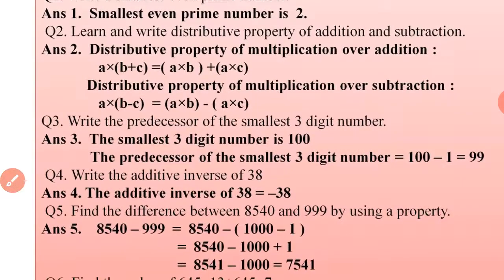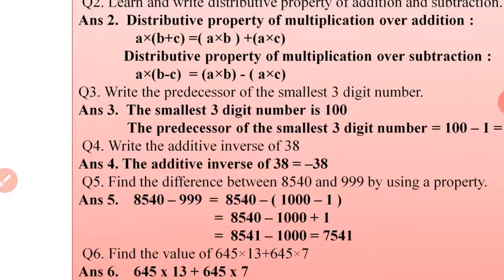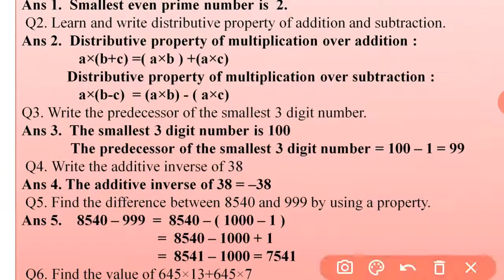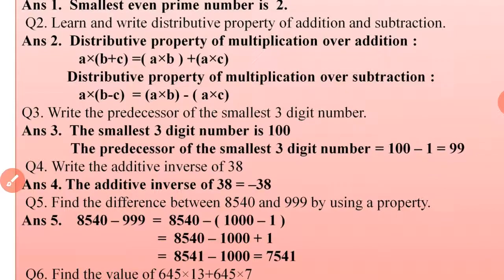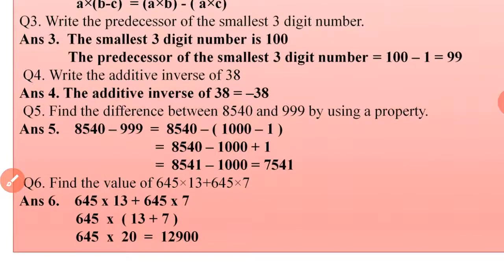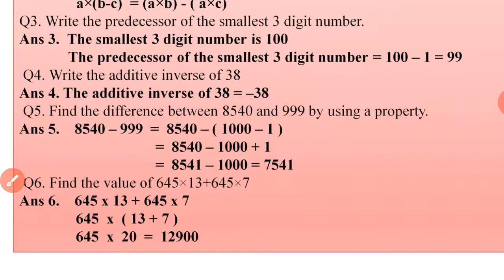Question 3: Write the predecessor of the smallest three-digit number. The smallest three-digit number is 100, so we subtract 1 from 100: 100 − 1 = 99. Question 4: Write the additive inverse of 38. In additive inverse we change the sign, so the additive inverse of 38 is −38.